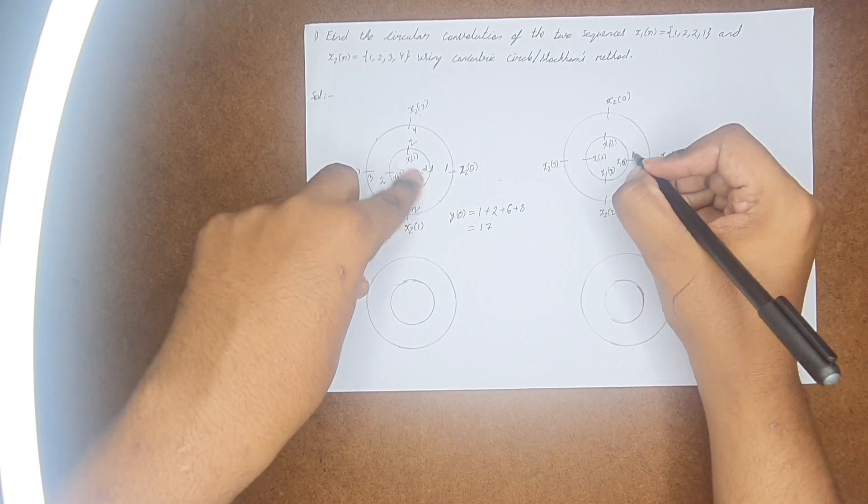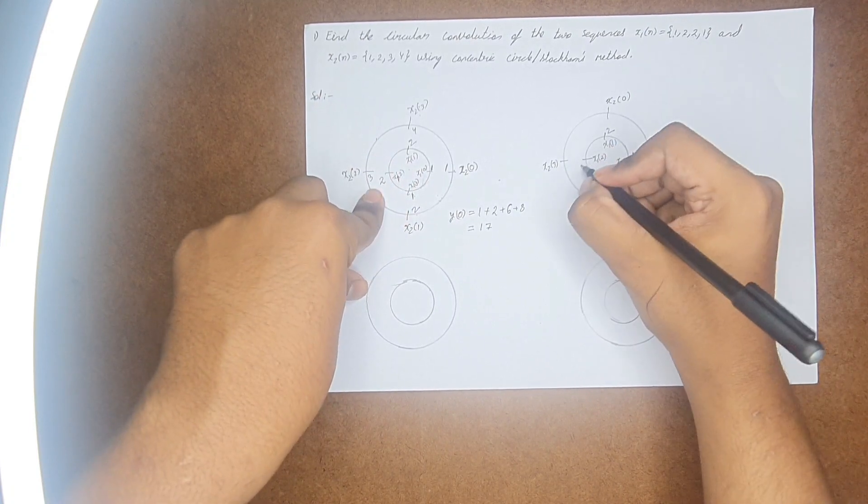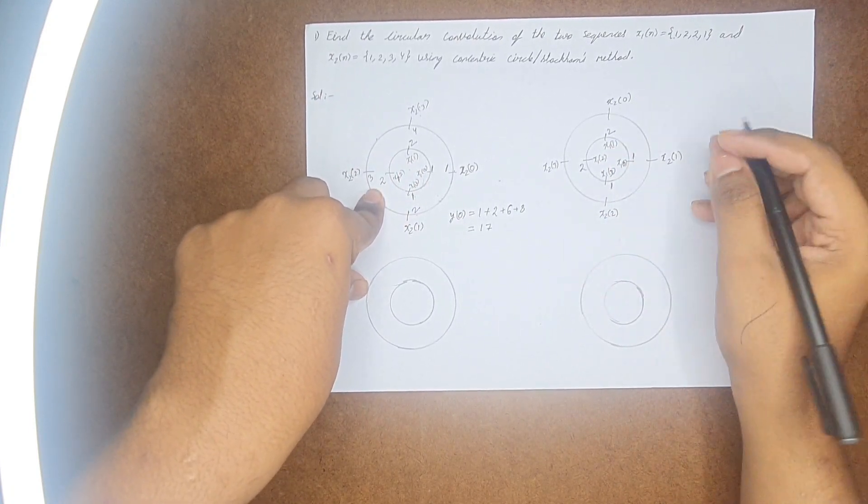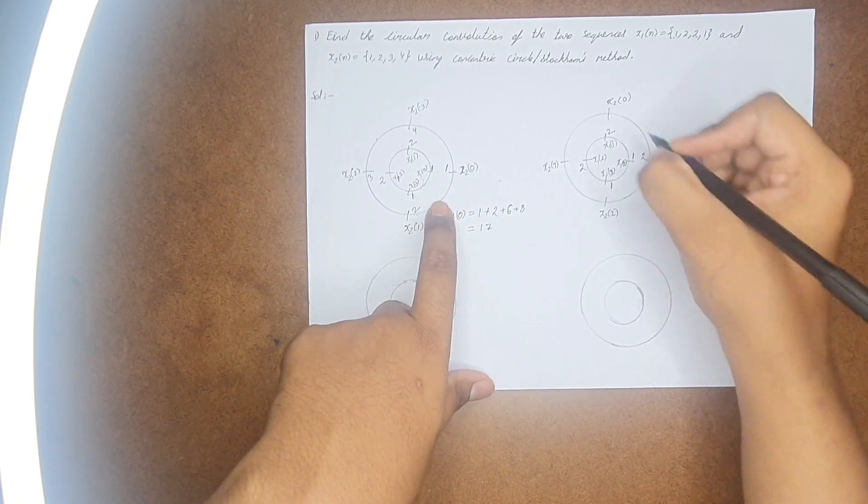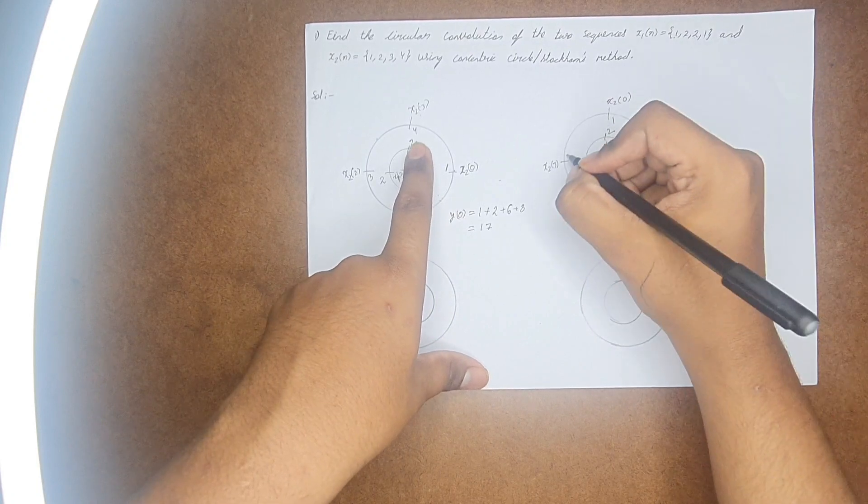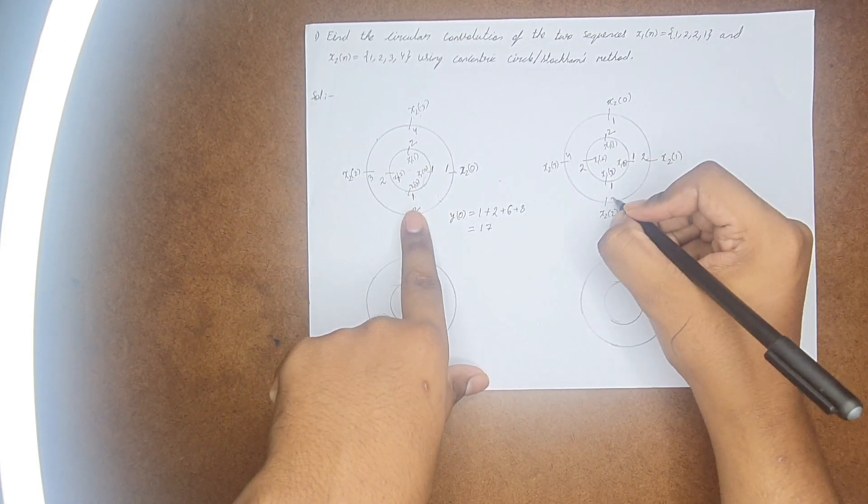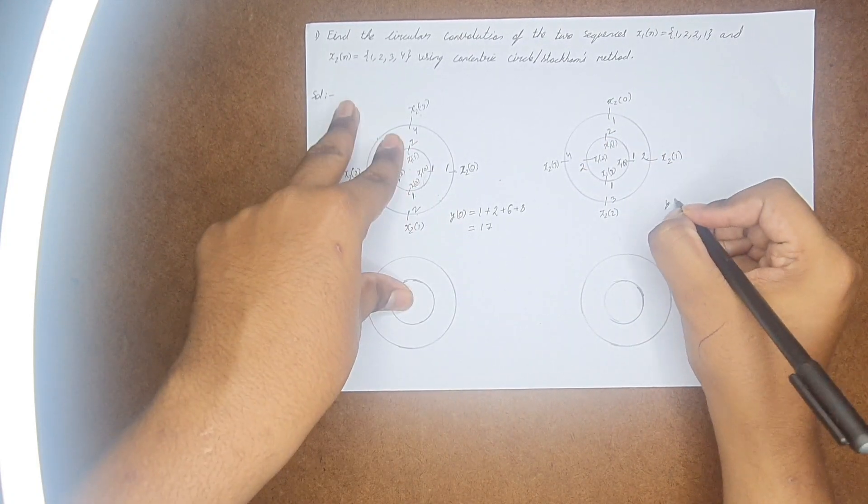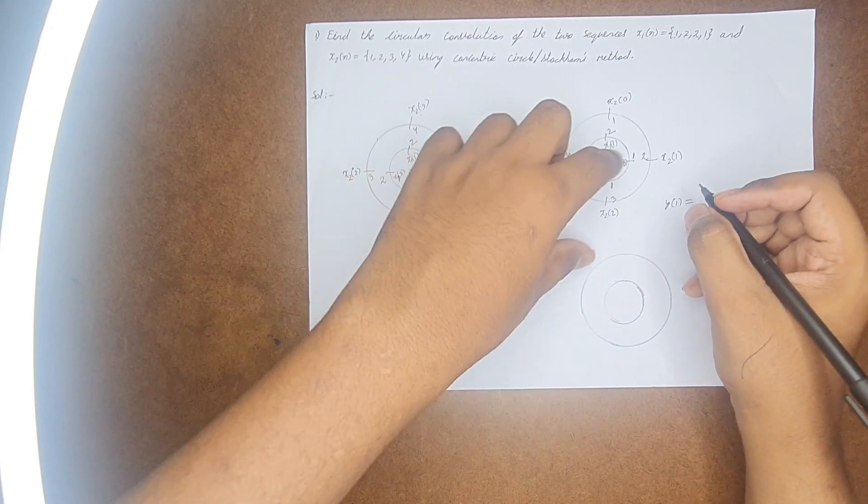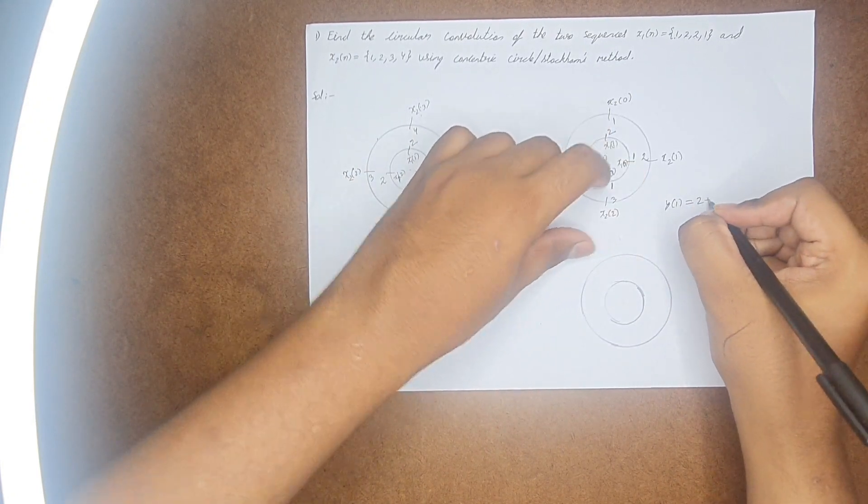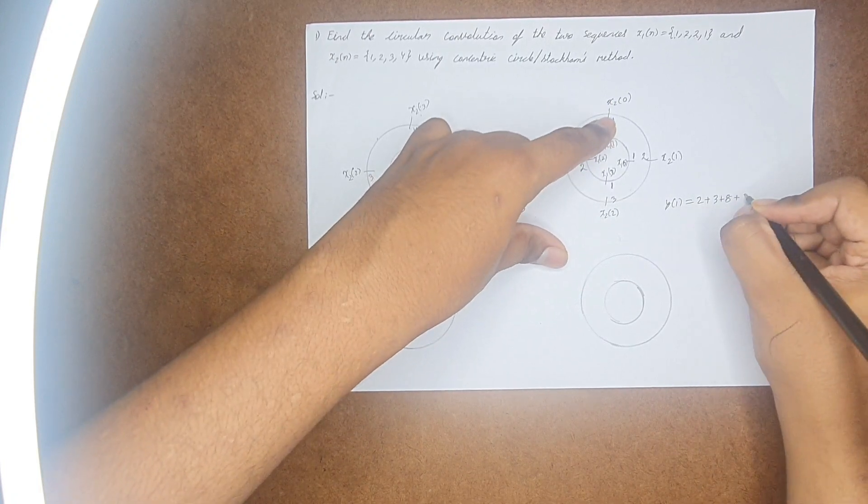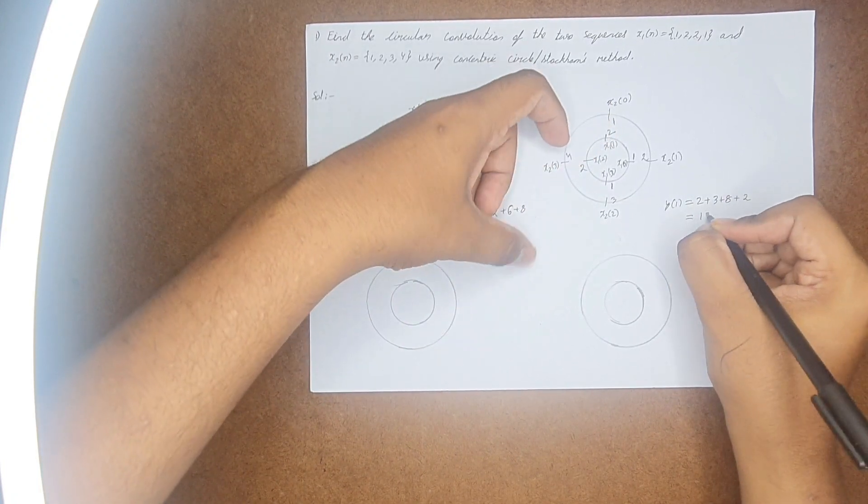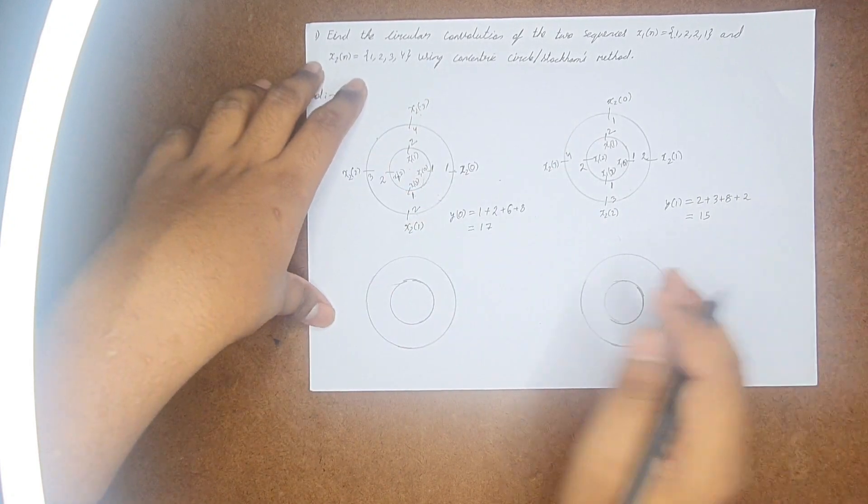Now let us write the values again. 1, this is 2, this is 2, this is 1. Similarly, here also, this is 2, this is 1, this is 4, and this is 3. Now find y(1), which is nothing but just multiply: 2 into 1 is 2, plus 2 into 3, plus 4 into 2 is 8, plus 1 into 2 is 2, which is nothing but 15.